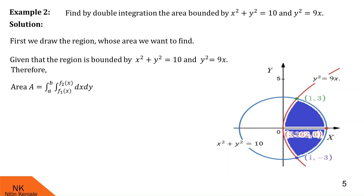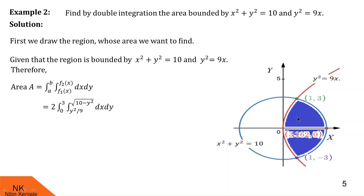Now let us find the area using the double integration formula. You can choose the order of integration wisely so that you do not have to split the region. Note that this region of integration is symmetric about the x-axis — the area above the x-axis equals the area below. So instead of calculating the entire area, we will calculate the area above the x-axis only and multiply by 2 to get the entire area.